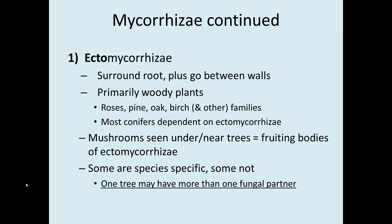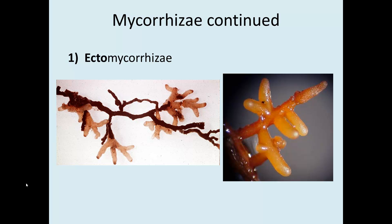The first picture shown was an ectomycorrhizae. They're primarily found in woody plants — roses, pines, oak, birch, and many other families. Many conifers actually depend on ectomycorrhizae; if they don't have their fungal partner, they can't survive. So when you see mushrooms underneath trees, that's the fruiting body of the ectomycorrhizal fungal partner. Some relationships are very specific — one species of fungus for one species of plant — while others may have 15 different fungi on one tree. The roots look unusual because there's a complete fungal layer around them.